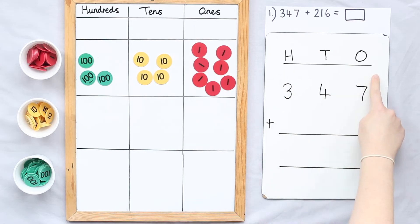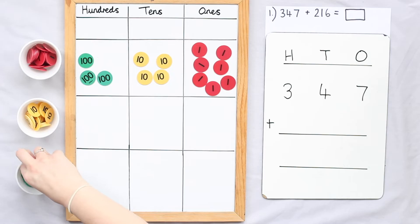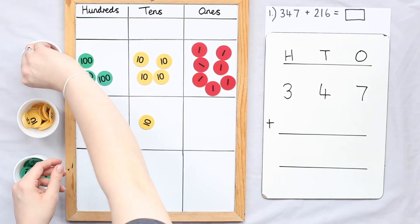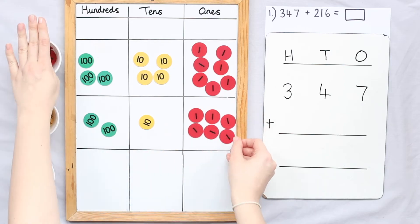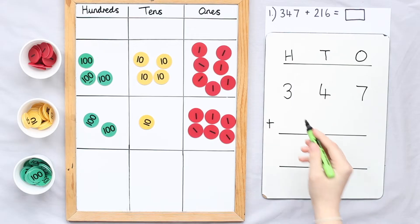Notice how I've left space above my first addend. My next step is to partition my second addend into hundreds, tens and ones. I have two hundreds, one ten and six ones. I'm now going to write my second addend underneath my first addend, so I have two hundreds, one ten and six ones.